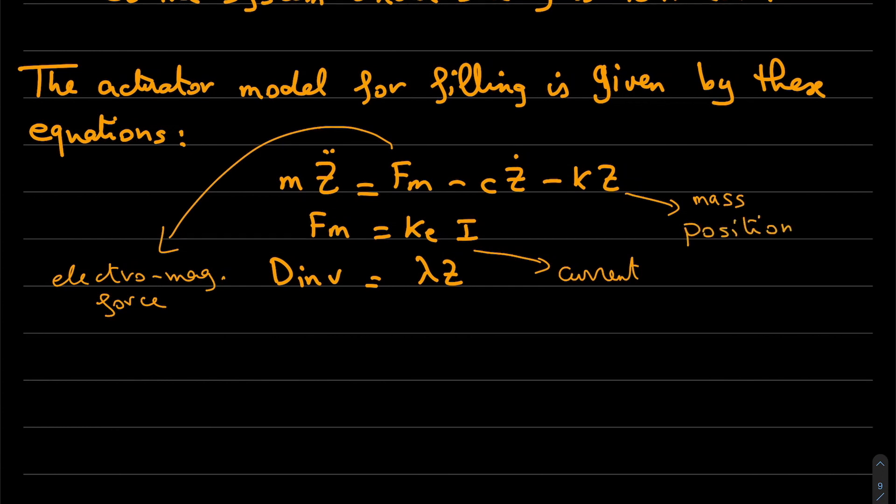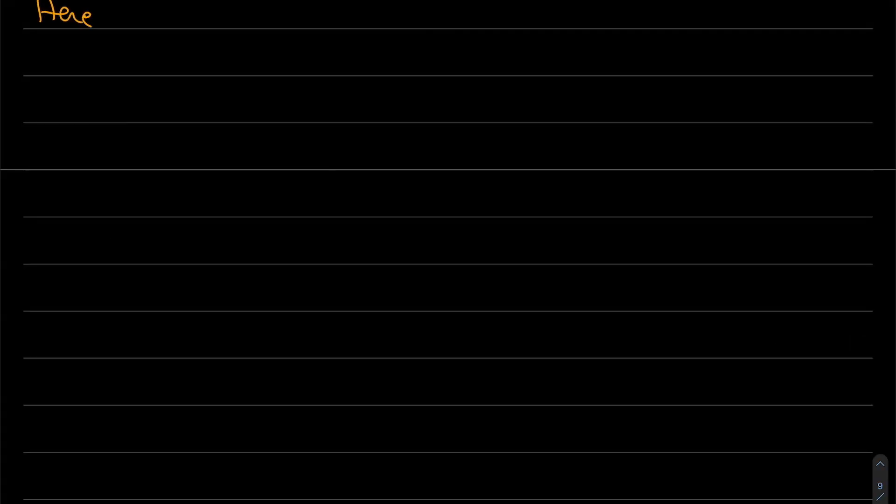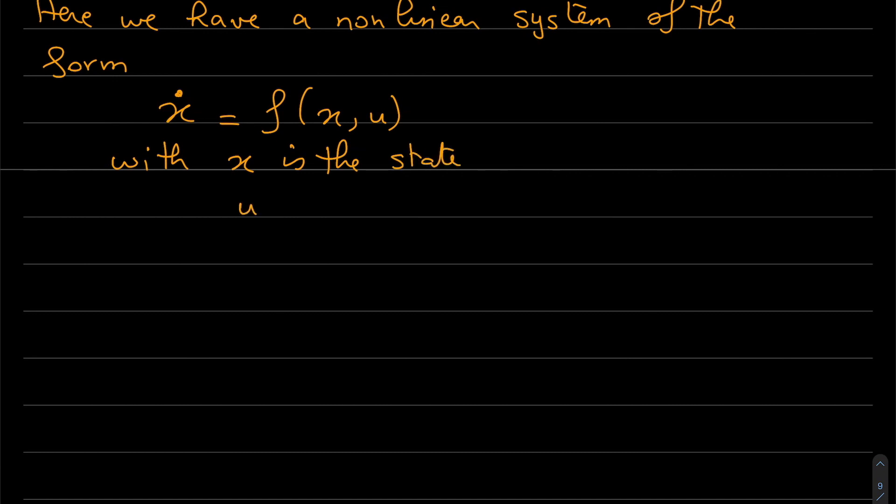k, e, lambda, and other parameters will be given later. So we need some theory here to find the linearized version. We have x dot equal f(x,u) where x is the state and u is the input. To find a linearized version of the system, we have to find an equilibrium point or any operating point.